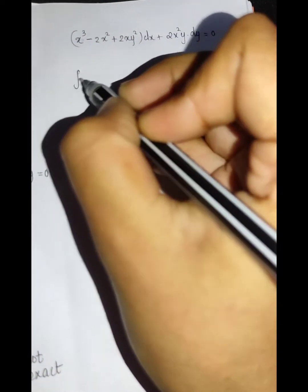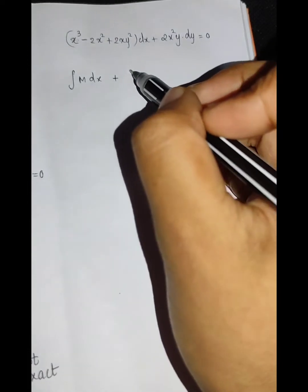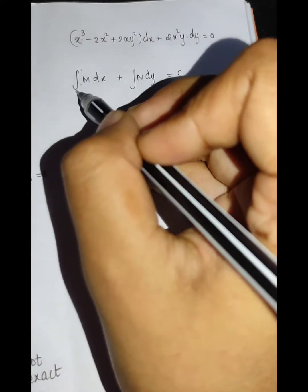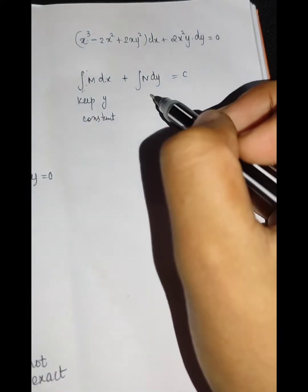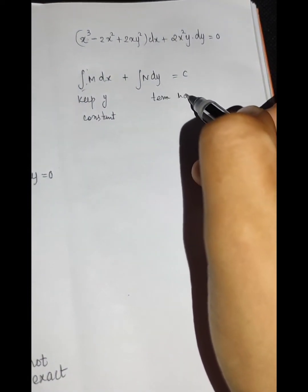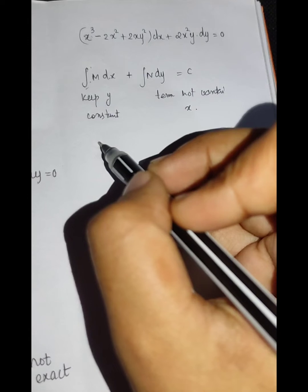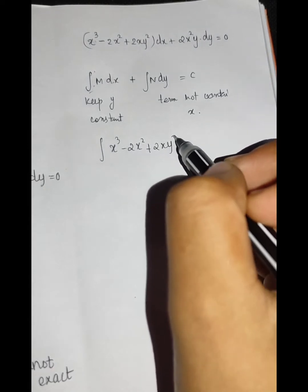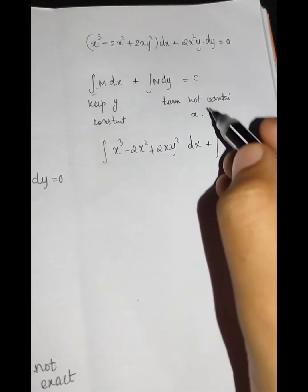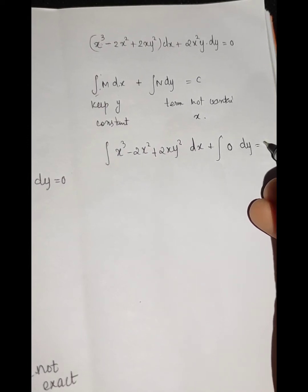The next step is the same: integral of M dx keeping y constant, plus integral of terms of N not containing x, equals c. We integrate x³ - 2xy² + 2xy² dx; the 2xy² terms cancel, leaving terms in x only equal to 0.